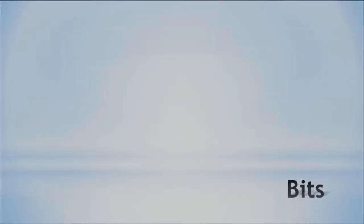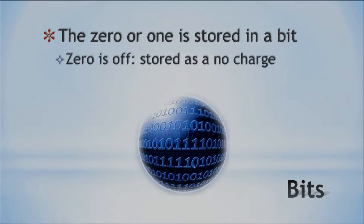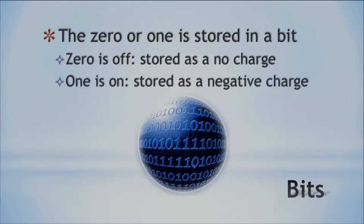Let's talk about bits. We've got zero or one, and it's stored as a bit — that's what we call it. The zero is off, stored as no charge. The one is on, stored as a negative charge. You can tell the difference: no charge at all means it's a zero; if it's negative, then it's a one — even though there's a little continuity between those two charge states.